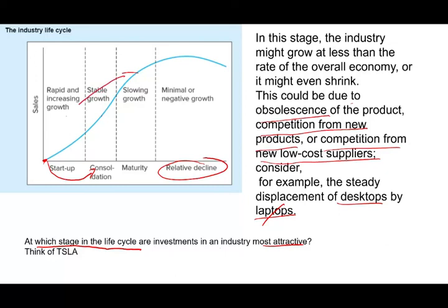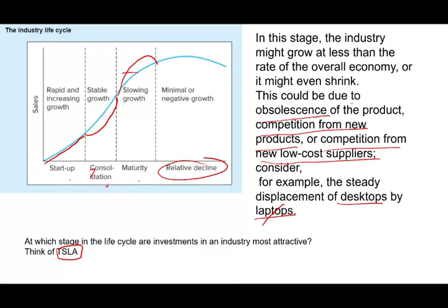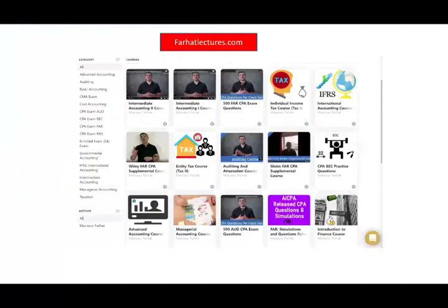The question is at which stage of the life cycle investments in an industry are most attractive. At the startup stage there is significant risk of not reaching consolidation; waiting for stable growth means missing early gains. It all depends on your risk tolerance. Think of Tesla — is it still in startup, consolidation, or approaching maturity? We do not know, but technology could change rapidly. The key point is you are taking risk at any stage you invest; you just need to understand your risk and how much you are willing to bear. Please like this recording, share it, and visit farhadlectures.com for additional resources. Good luck, stay safe, and study hard.